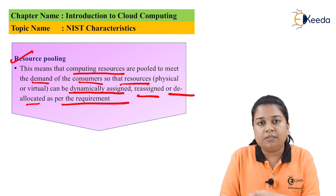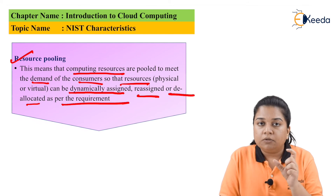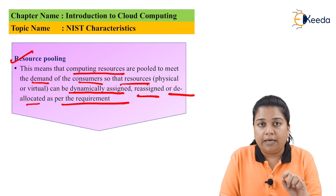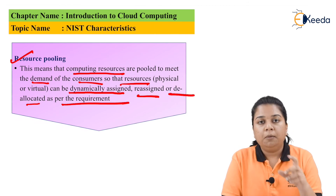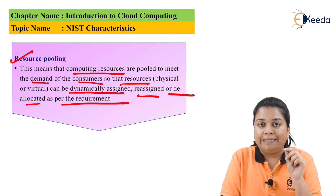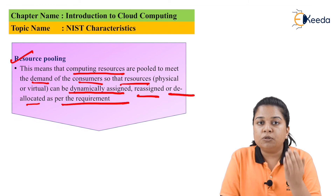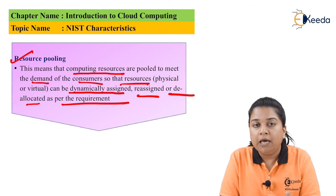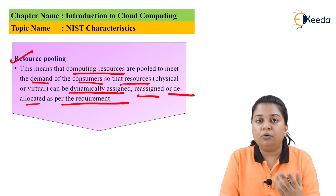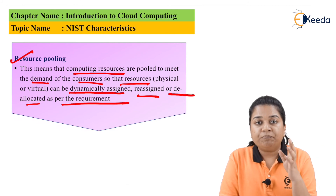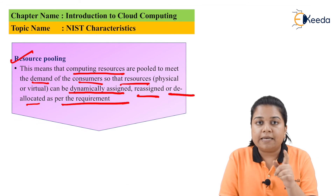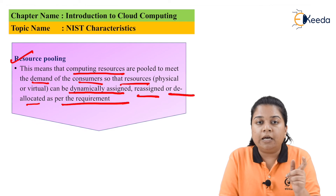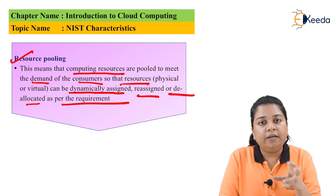If the client needs storage space, network space, server space, application, or operating system — it uses it. After a certain time, if the resource is no longer required, those resources are freed up because you only pay for the time and amount of resources you are using. After that, those resources can be assigned to some other client and can be re-allocated to you again if you require them at a later time.